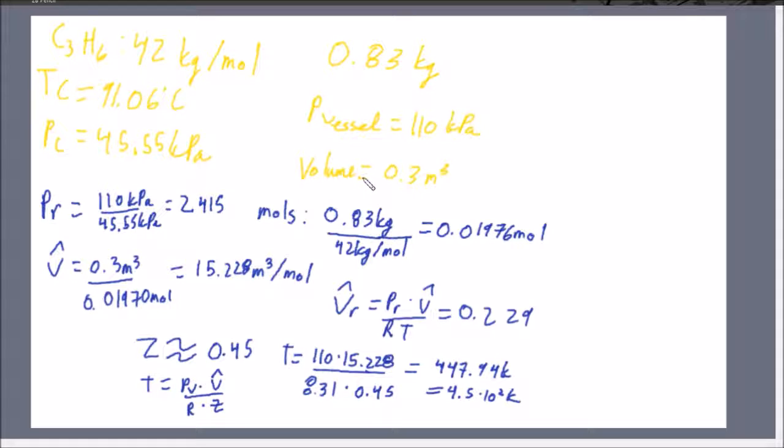We are given a volume, so maybe there's something we can work with that. We have mass and molar mass, so obviously in every chemistry question you find moles. If you do the math, 0.83 kilograms divided by the molar mass gives 0.01976 moles of propene.